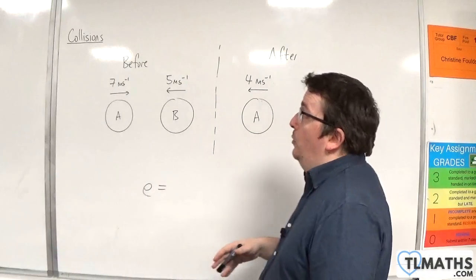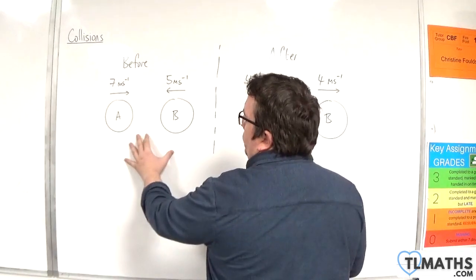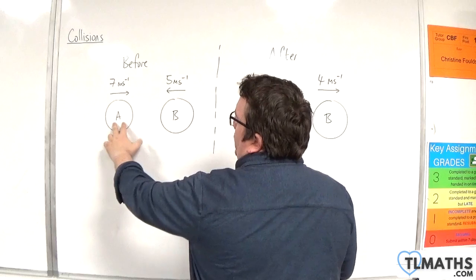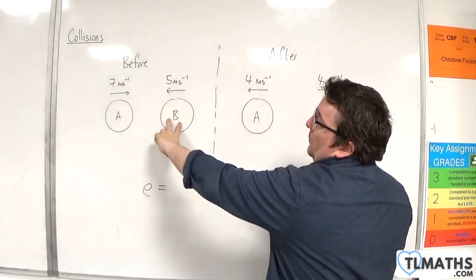In this video I want to go through another example of finding the coefficient of restitution. Before the collision we've got two particles, A and B. A has a velocity of 7 metres per second, B has a velocity of minus 5 metres per second.